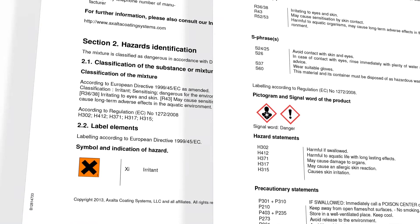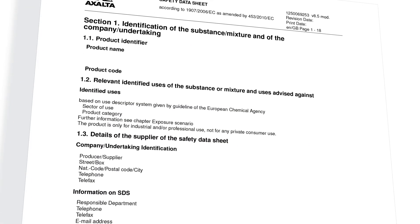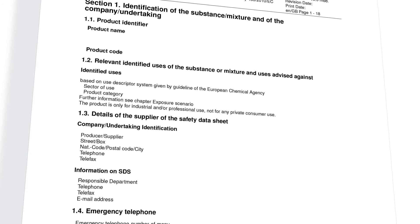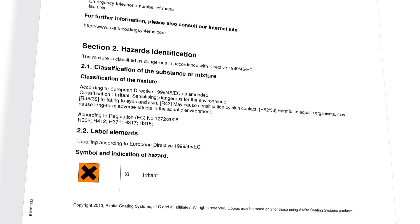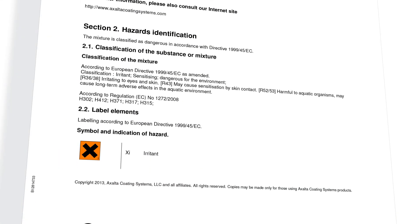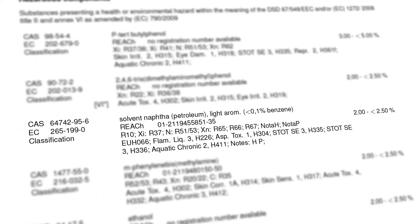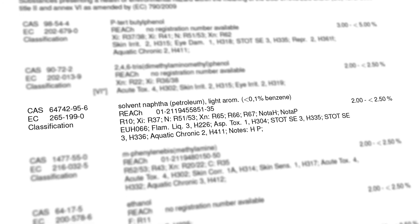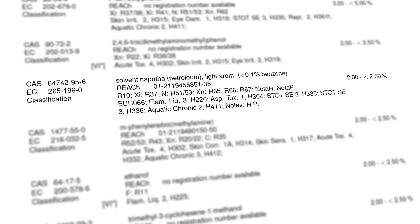Now we will take a closer look at the important sections in the hazard identification. Section 1 Identification shows all information needed to identify the product and the contact details of the supplier. Section 2 Hazards Identification shows both the old hazard classification and the new CLP details. Section 3 shows the compositional details of the hazardous ingredients that the product's hazard classification is based on.